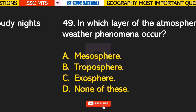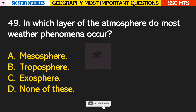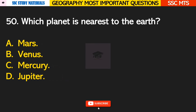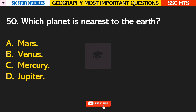Question number 49: in which layer of the atmosphere do most weather phenomena occur? Answer B — Troposphere. Question number 50: which planet is nearest to the Earth? Answer C — Mercury.